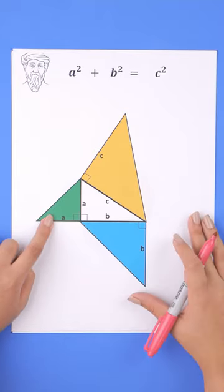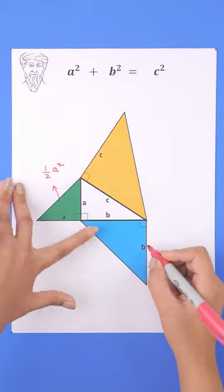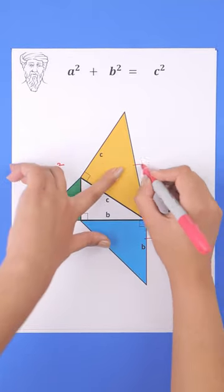Like all these right triangles have the areas. And since a squared plus b squared equals c squared, half of them must also be equal.